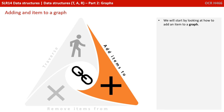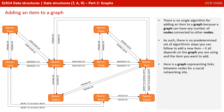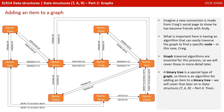Let's start by looking at how to add an item to a graph. There is actually no single algorithm for adding an item to a graph because a graph can have any number of nodes connected to other nodes. As such, there is no predetermined set of algorithmic steps you can follow to add a new item — it all depends on the graph you are using and the item you want to add. For example, here is a graph representing links between nodes for a social networking site. Imagine a new connection is made from Craig's social page to show he has now become friends with Andy. What is important here is having an algorithm that can easily traverse the graph to find a specific node — in this case Craig. Graph traversal algorithms are essential for this process, so we'll cover those in more detail later.